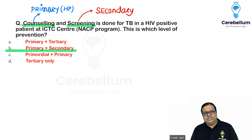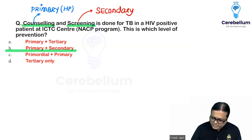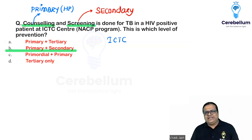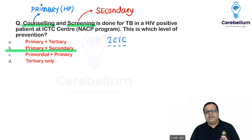The answer is choice B — primary plus secondary. Please mark these questions carefully in the paper. The full form of ICTC is Integrated Counseling and Testing Center, which is the specific name of the testing center for HIV in the National AIDS Control Program.